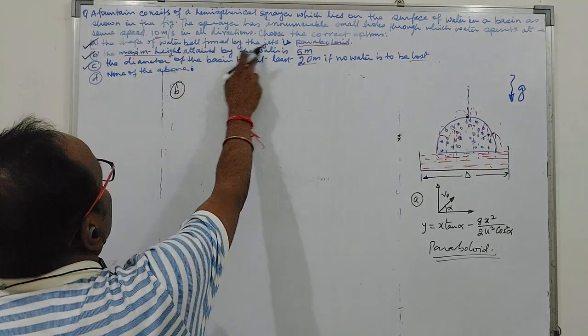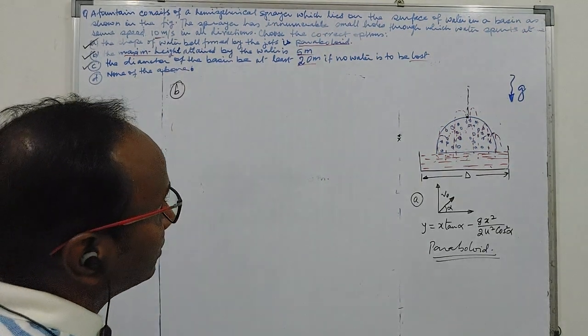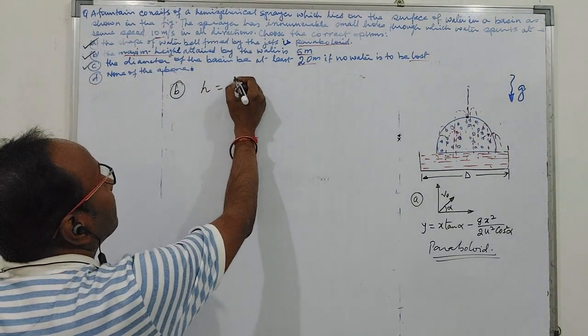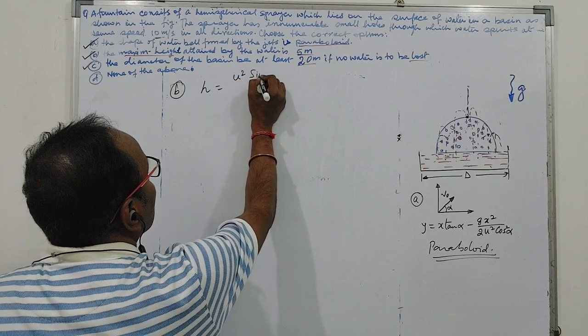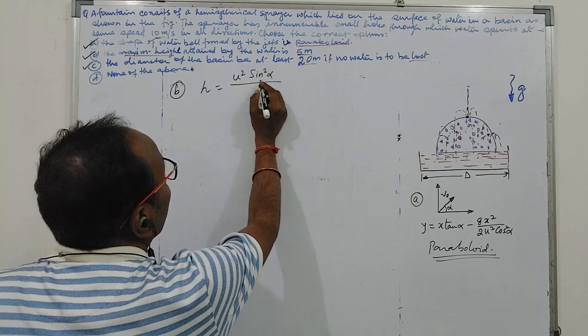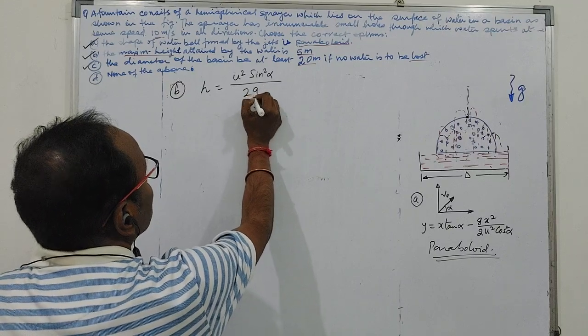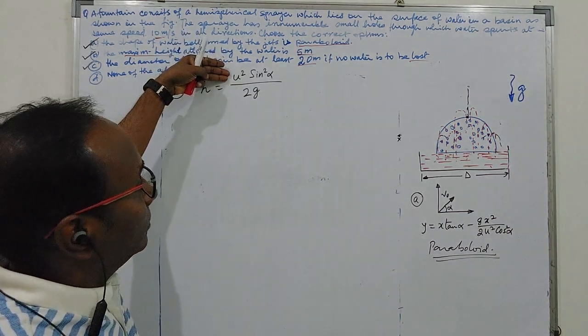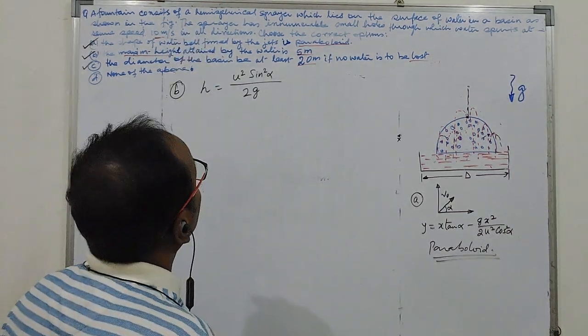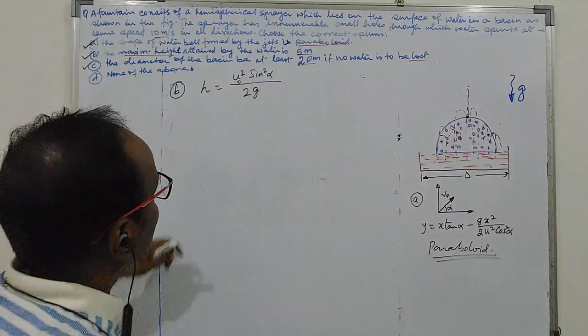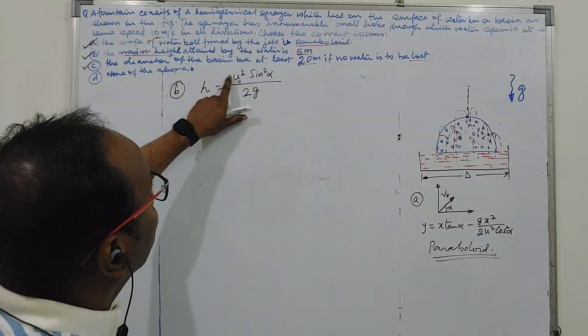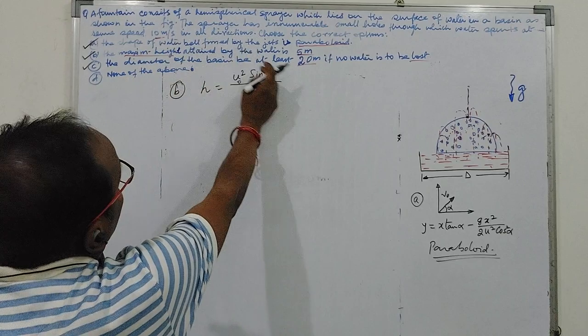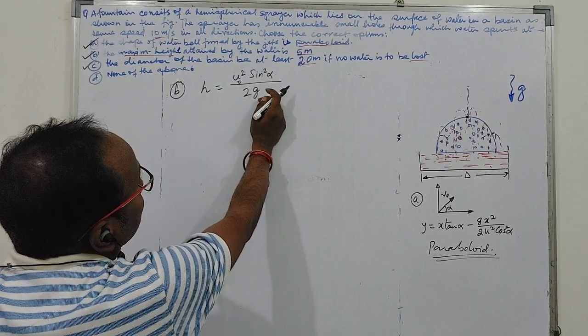Now come to B part, the maximum height attained by the water is 5 meter. So you know by equation, H is equal to u square sine square alpha by 2g. Since we are writing v naught, so we should write v naught square sine square alpha by 2g. v naught is 10 meter per second, g is fixed at 10 meter per second square, alpha is the only variable.